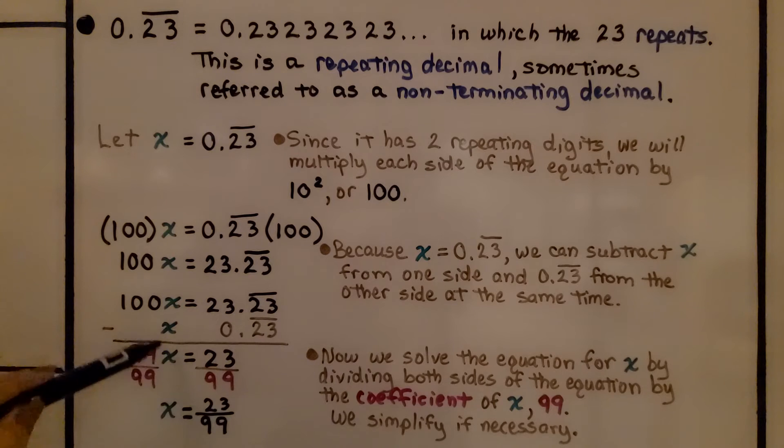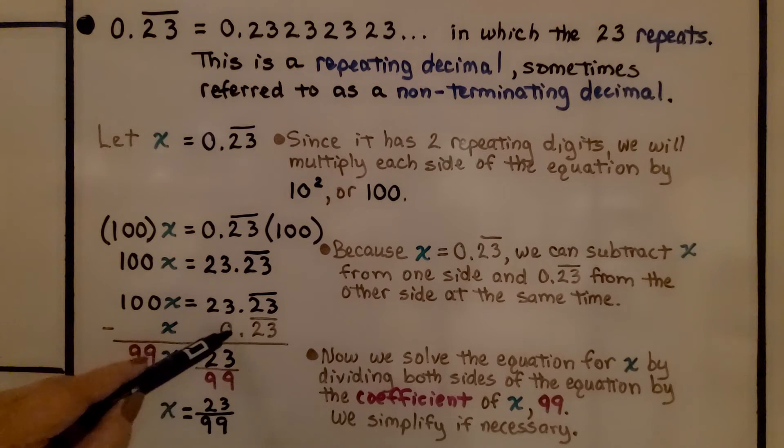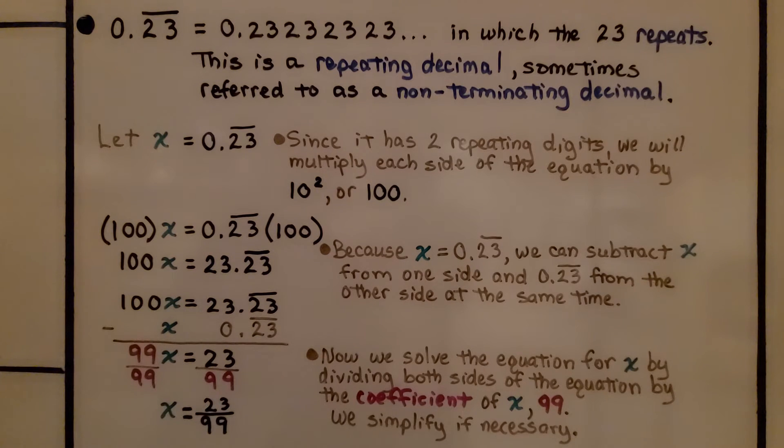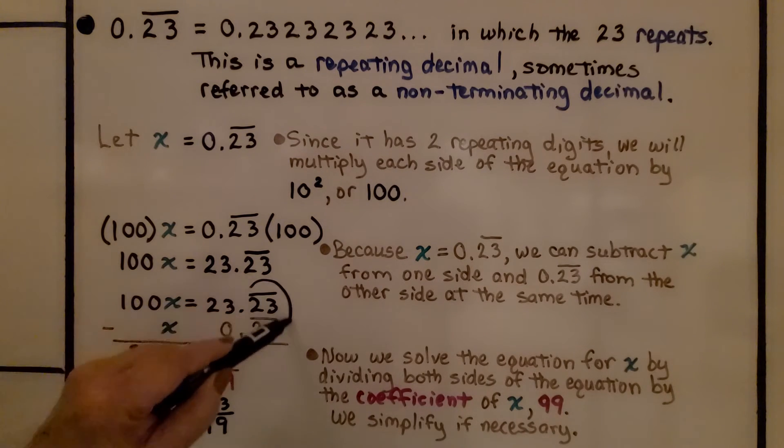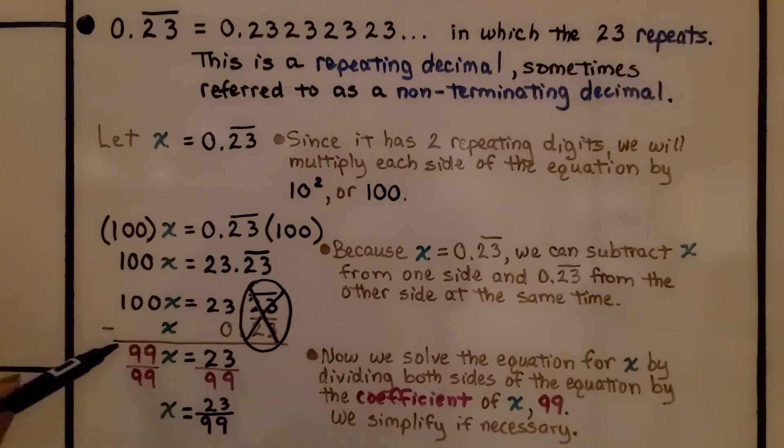We subtract the x here and we subtract this repeating 0.23 from here. Now, do you remember that 100x means 100 times some number and if we have 100x's and we take one of those x's away, we're going to have 99x's left. That's going to give us 99x is equal to 23. We took away this part. Now, we just have 99x is equal to 23.